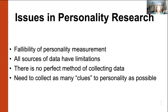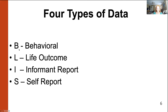There's no perfect source of data and all data have their limitations, so we need to collect as much data as possible, as many different types as we can. That gets expensive and maybe not so practical, but if we want valid research, we need more data. So here are the types again: B is behavioral data, L is life outcome data, I is informant report.